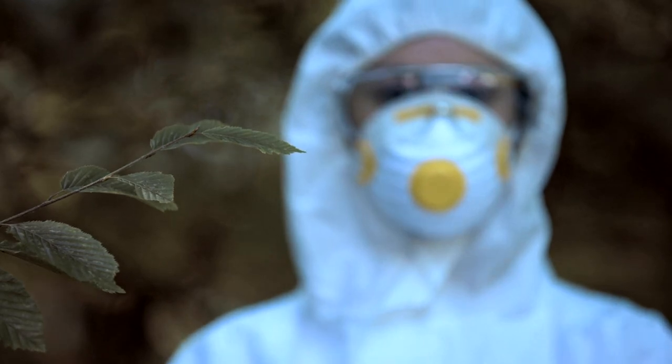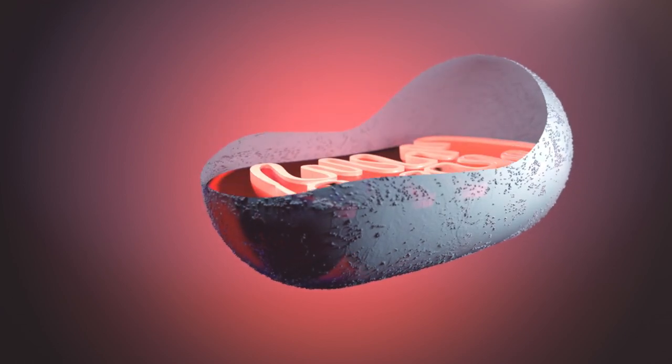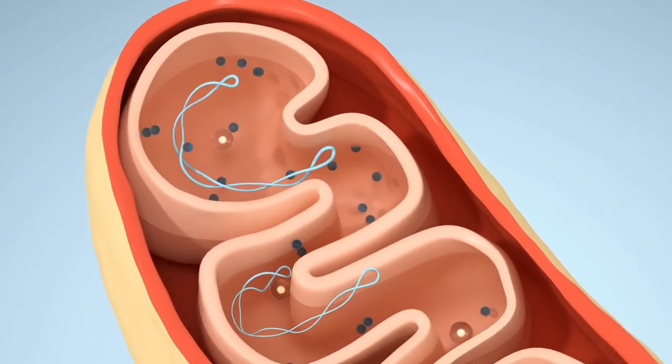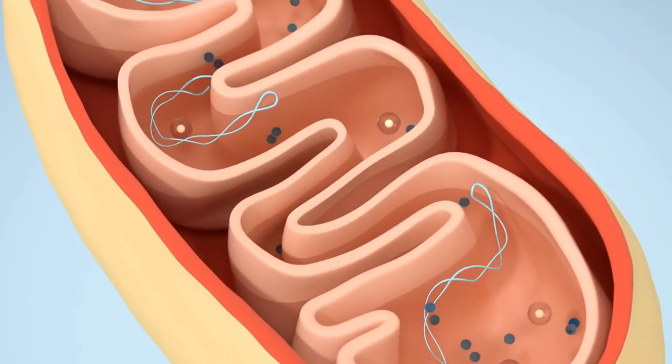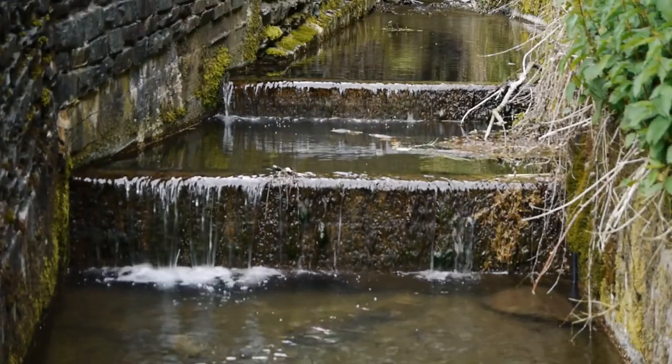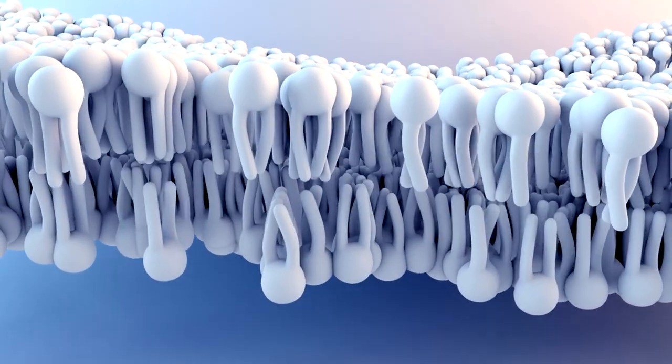This is high-stakes biochemistry, folks. As these electrons move down the chain, they release energy. And what does the mitochondria do with this energy? It pumps protons across the inner membrane, creating a proton gradient. Think of this like water building up behind a dam. The tension is rising and the potential energy is just waiting to be unleashed.